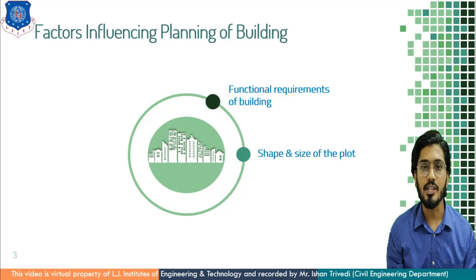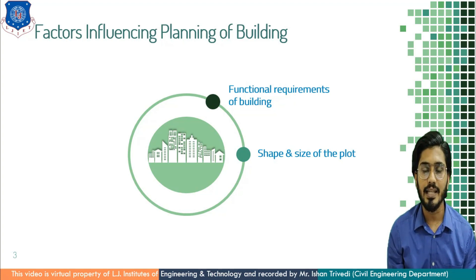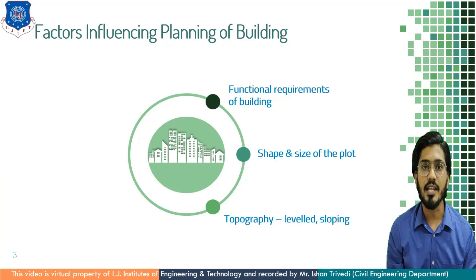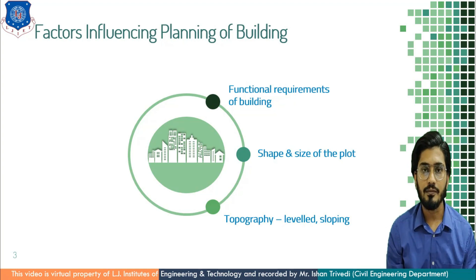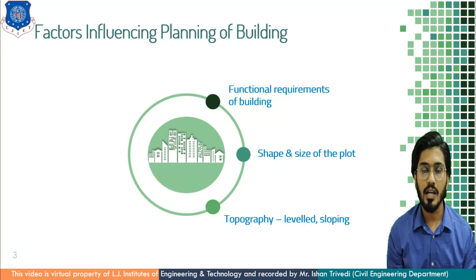Next is shape and size of plot. Once we determine the type of building, we have to look at the size and shape of a plot at a particular site, based on which the final design is done. Next is topography. Once we finalize the shape and size of the plot, the topography will be considered. There may be undulations or contours in the ground, so the topography can be leveled or sloping. If cutting is required, we cut that excessive part; if filling is required in any depression, we fill it and level the surface.